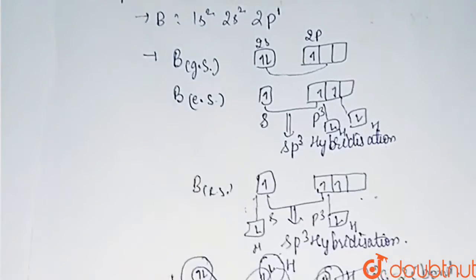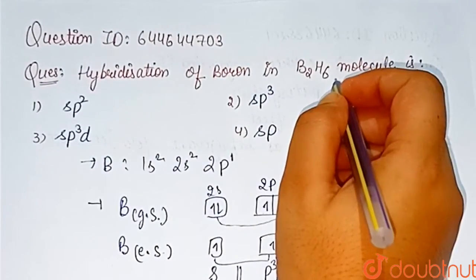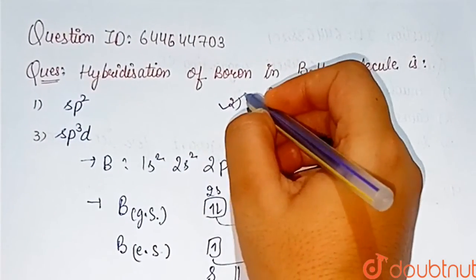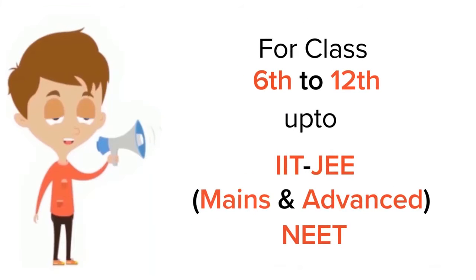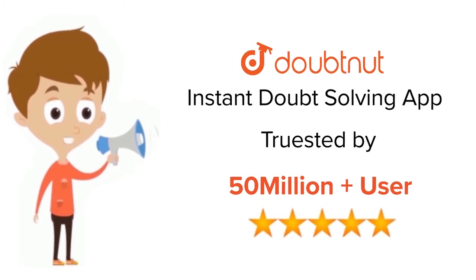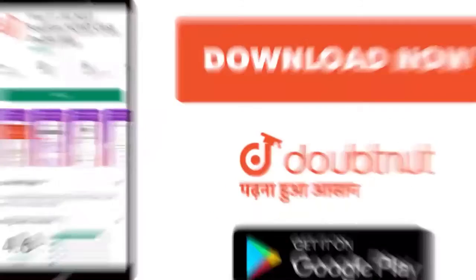The hybridization of boron in B₂H₆ molecule is sp³, so option 2 is the correct answer to this question. For class 6 to 12th, IIT-JEE and NEET level, trusted by more than 5 crore students, download Doubtnut app today.